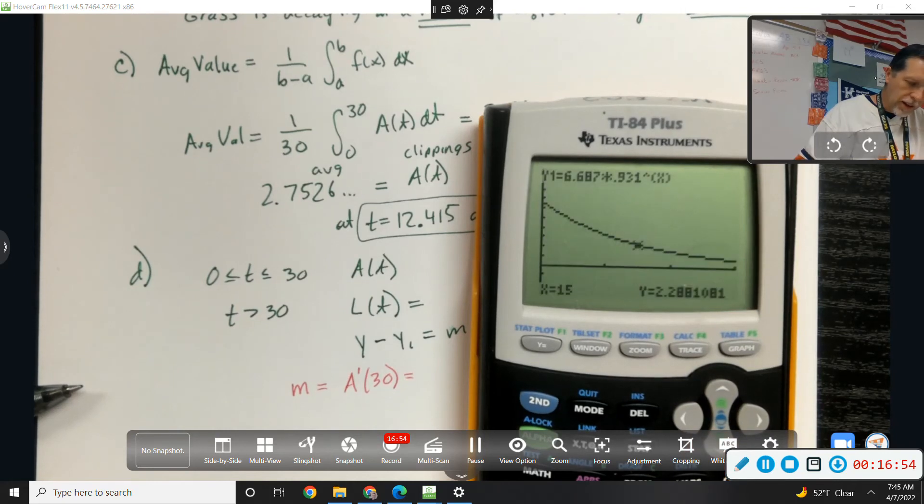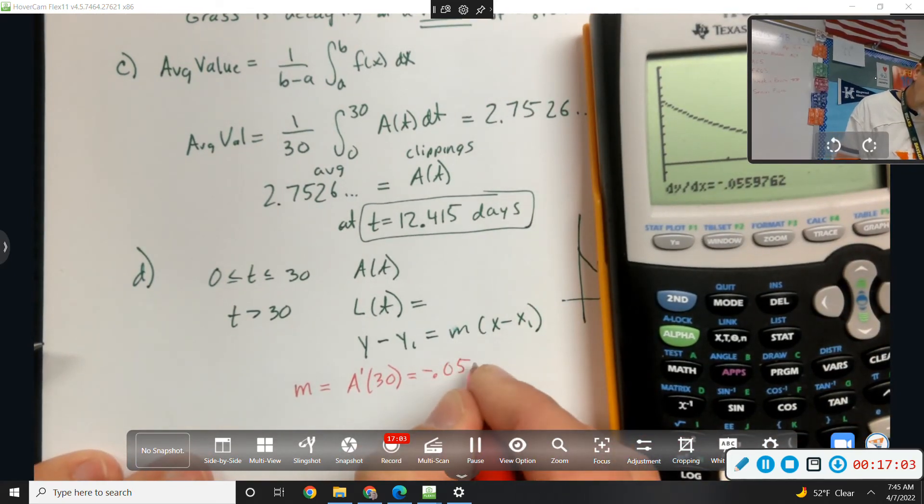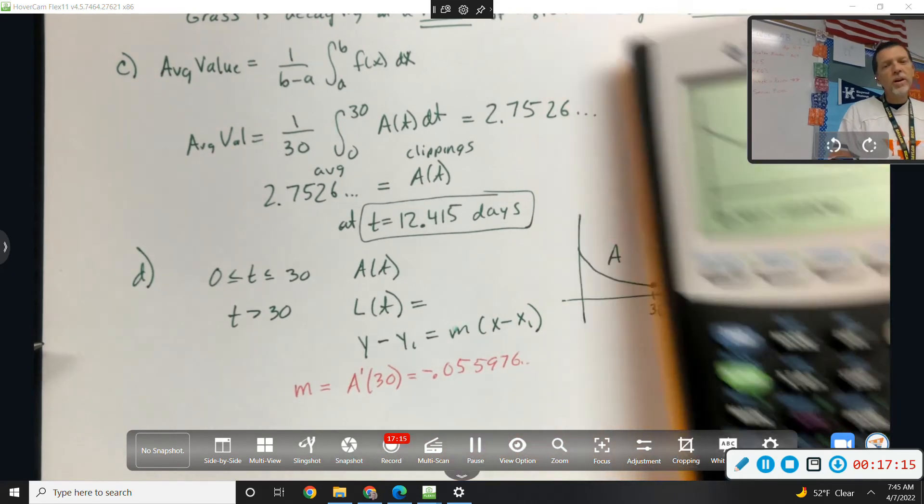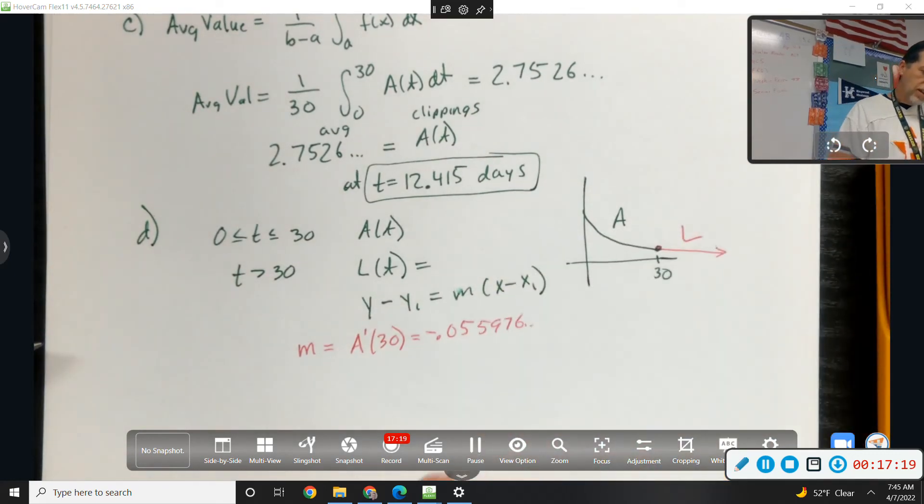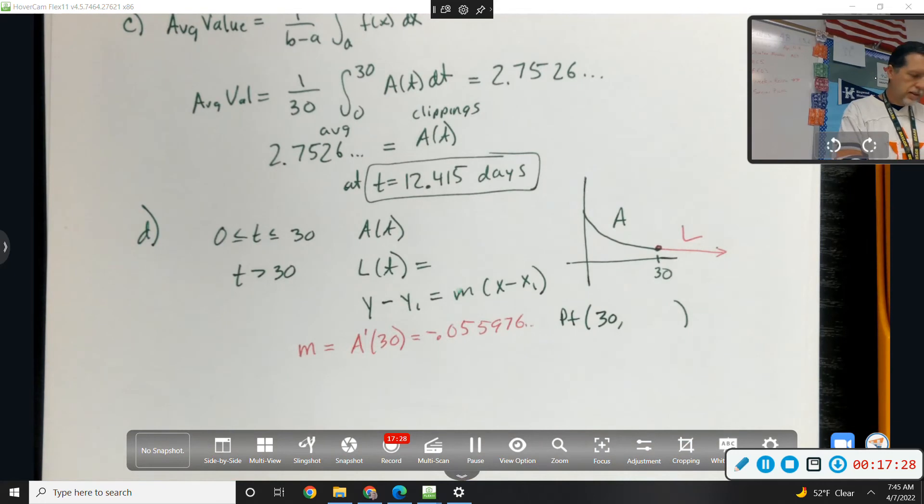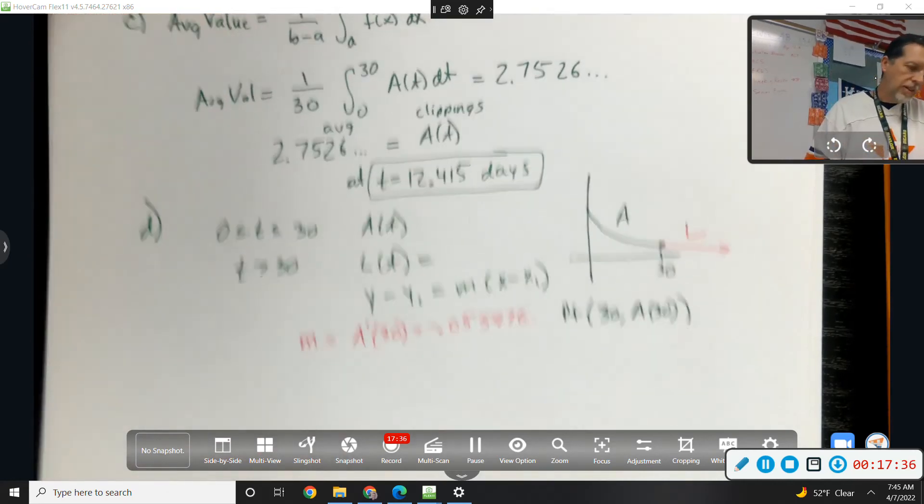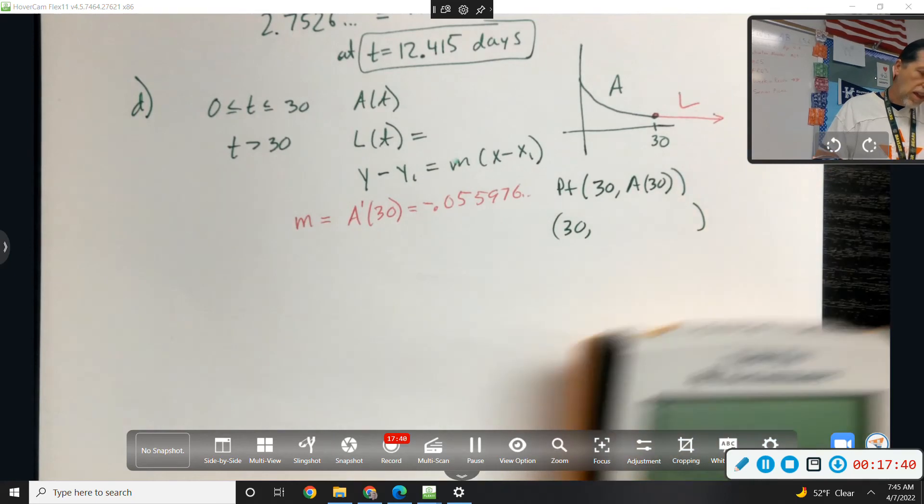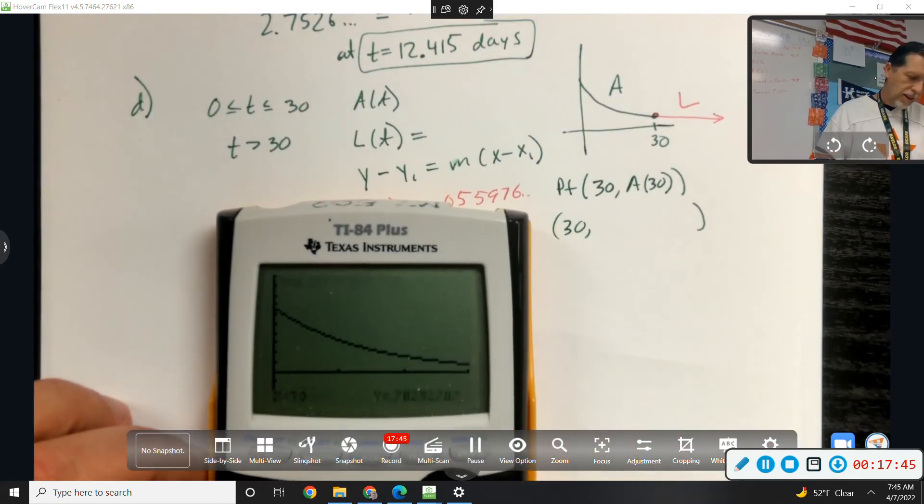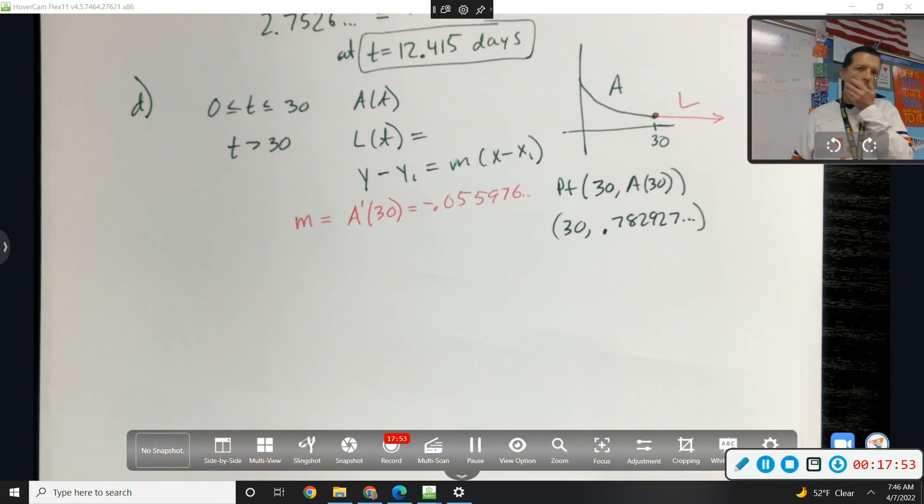So the M I need is A prime at 30. I can find that on the calculator. I want the slope at 30 and the point at 30, and I'll use that to make my line that takes over at 30. So I can calc dy/dx at 30, negative 0.05 to three decimal places. 0.055976, you can always write more and they will only grade the first three. So if you write more, you're okay. And the point we'll use is 30, comma, we could be cute and just put A of 30 because that's how we're going to find that point. Second calc value at 30. Point 0.782927.